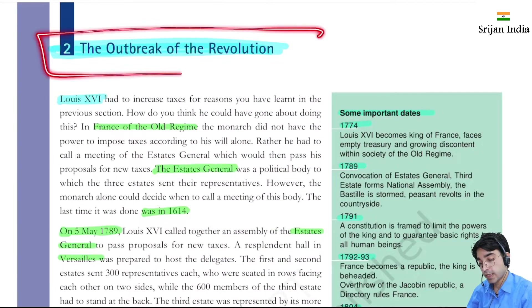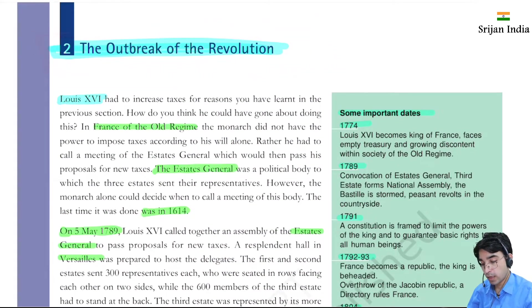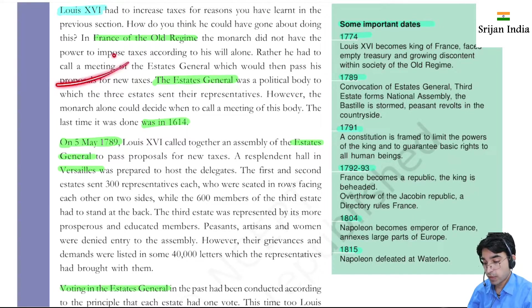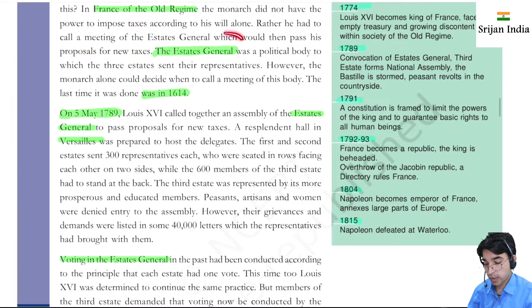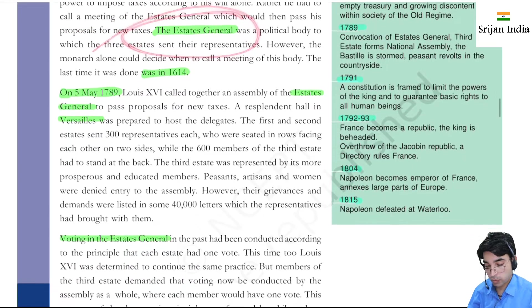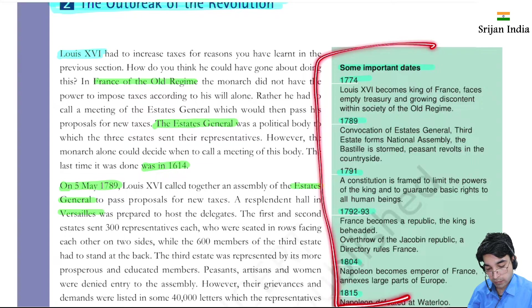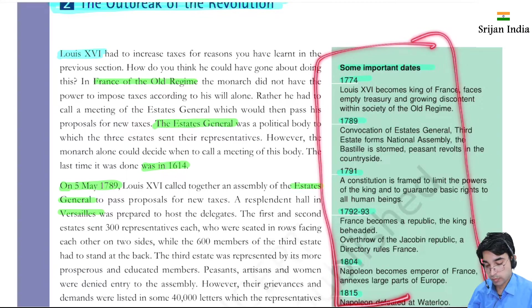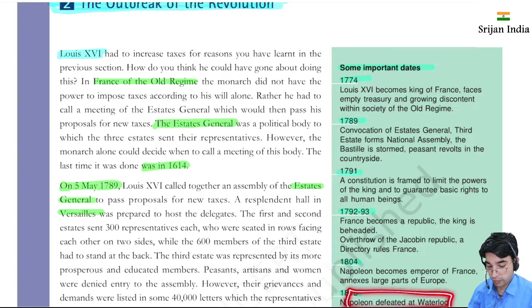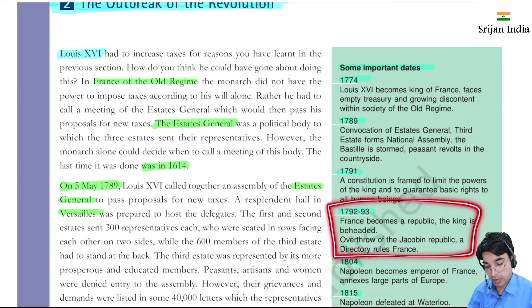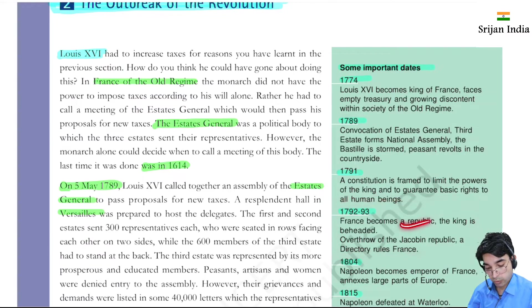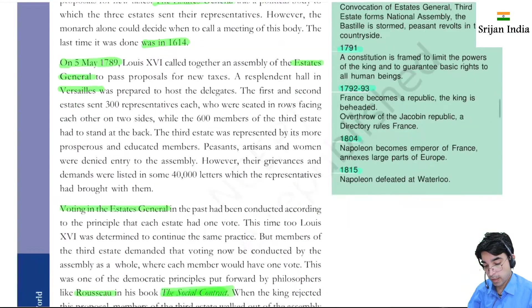In the second video, we saw the outbreak of the revolution. France was under the old regime, and the Estates General was called. Important events included 1815, when Napoleon was defeated at Waterloo. We also saw the directory rule in France, covering the periods of 1792 and 1793. Now we will see Napoleon's role as well.